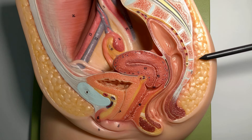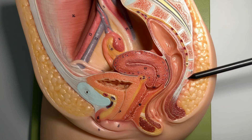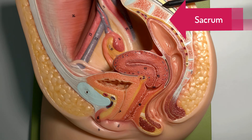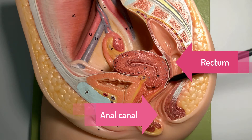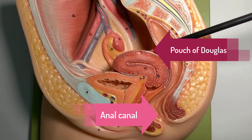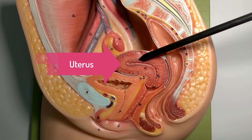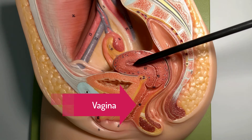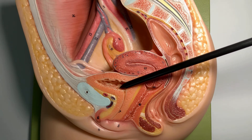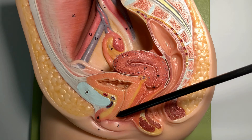We'll be talking about the female urethra, but first let's orient on this model. The most posterior structure is the sacrum, and in front of it we have the rectum that becomes the anal canal. Then we have the pouch of Douglas, the uterus with its body, fundus, and cervix, and you can see the vagina. The uterus is leaning over the urinary bladder, and this is the cavity of the urinary bladder.